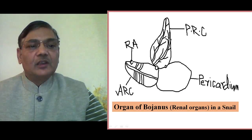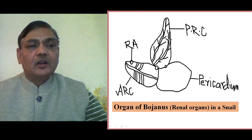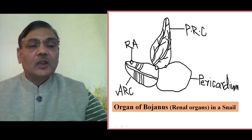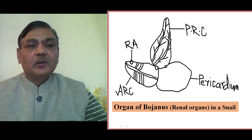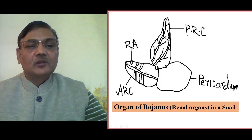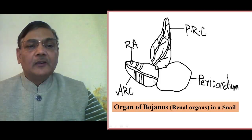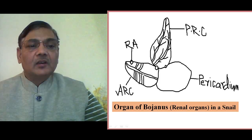In aquatic snails, the excretory material is released in the area from where water exits. Through the exhalant siphon, or the external branchial opening, water goes outside, and along with that outgoing water, the renal content is also released. The anterior renal chamber, with its many lamellae, helps in the excretion process and also receives blood supply through the afferent renal sinus.